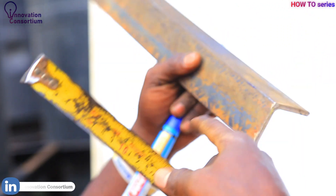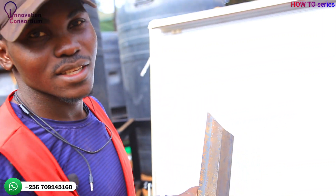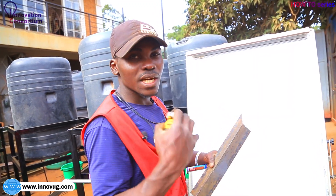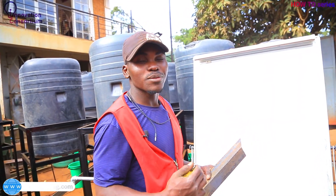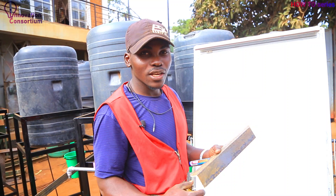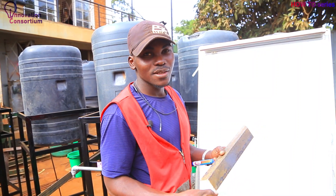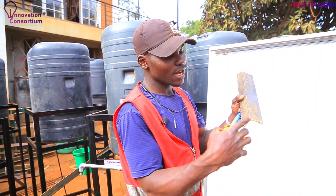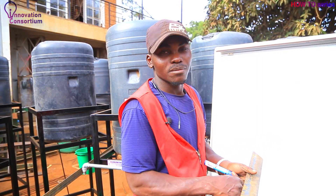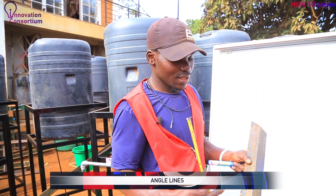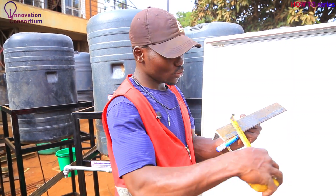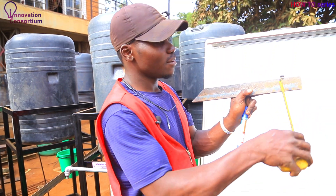So basically this is a 50 by 50 angle line. Most angle lines, both faces have the same size. But on rare occasions you'll find angle lines where one face is 50 and the other is 60 — they are manufactured, but the most common types of angle lines have equal measurements on both faces. So this one is 50 by 50.